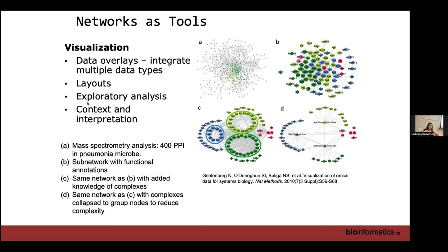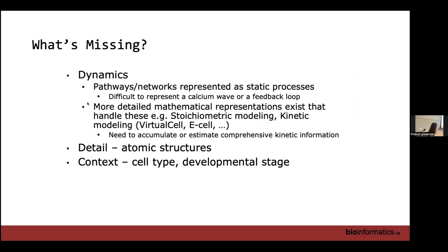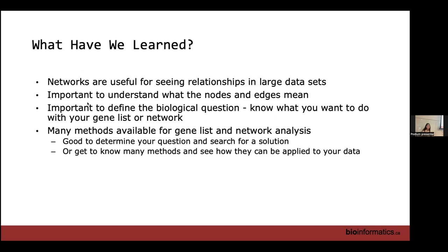Unfortunately, networks are good but some things are missing. Dynamics are difficult to represent over time. Cellular location is also hard to represent — a network is not a flow diagram. Some apps try to represent context like cell nucleus and cell wall, but that takes a lot of work by the app creator. There are other programs that better represent dynamics and localizations. Networks are still useful for large datasets, but it's important to understand what your nodes are and how you'll define them.